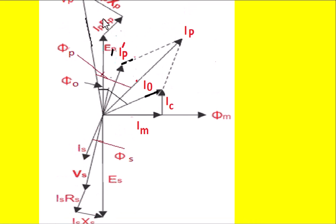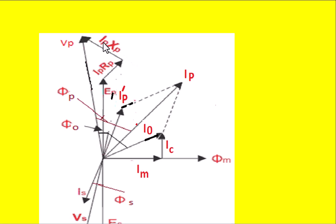Next, draw vector IC perpendicular to IM, representing the no-load core loss component. Then draw the resultant no-load current I0 as the resultant of IM and IC. Having known I0 and IP dash, find their resultant to get IP — the input current to the primary winding (also called I1). Now draw a line vector IP·RP (also written I1·R1) in phase with IP, and then draw IP·XP (also written I1·X1) perpendicular to the current vector IP.